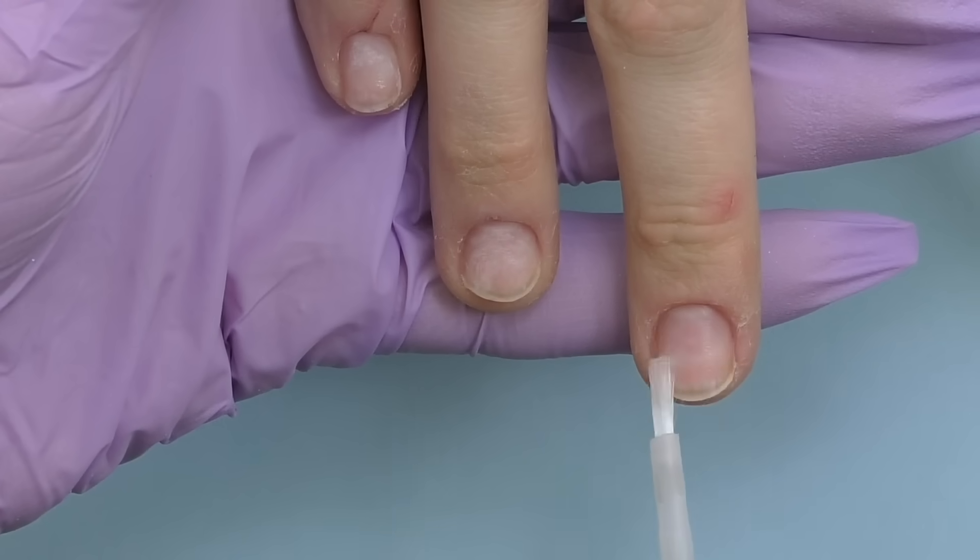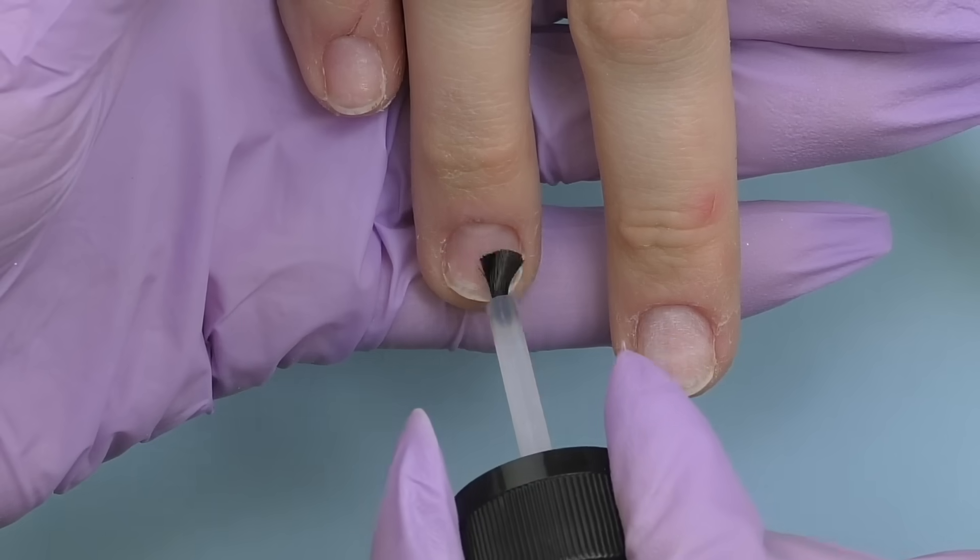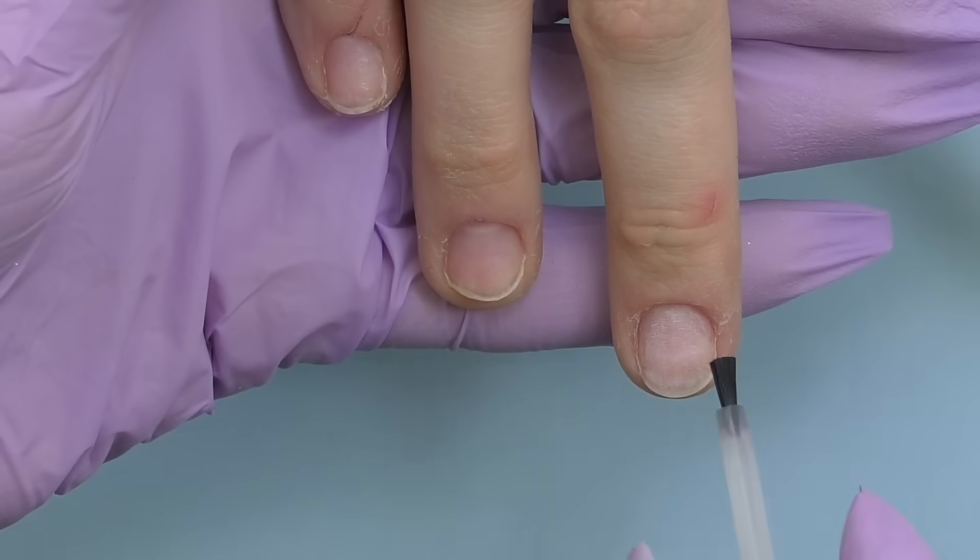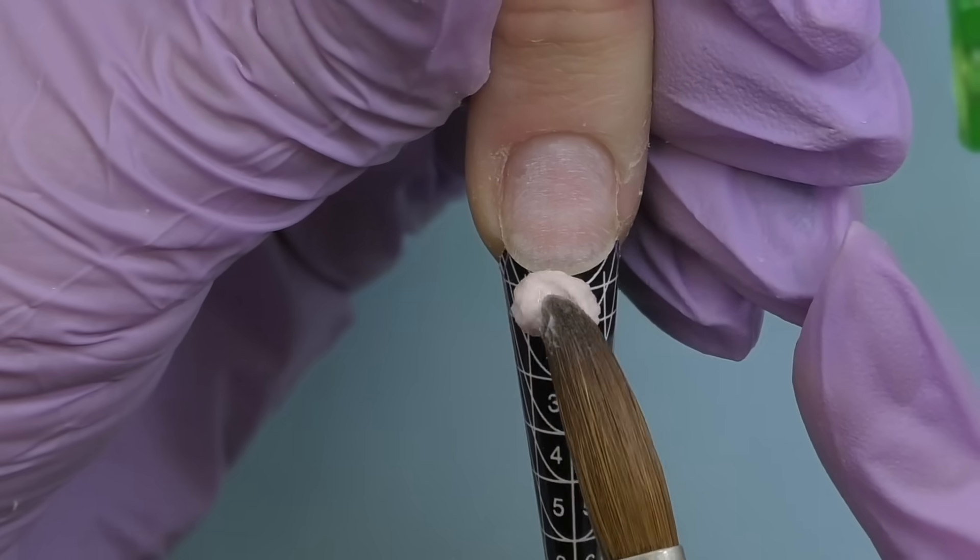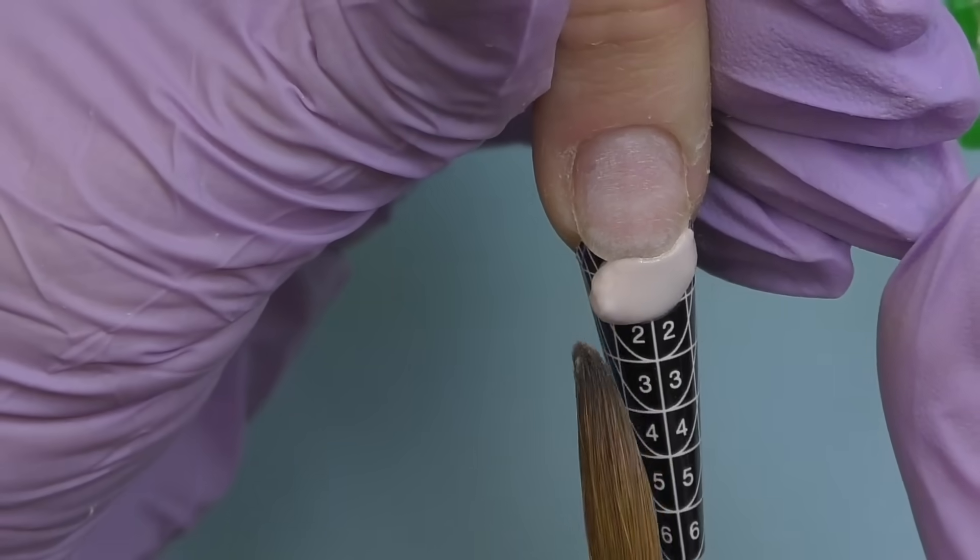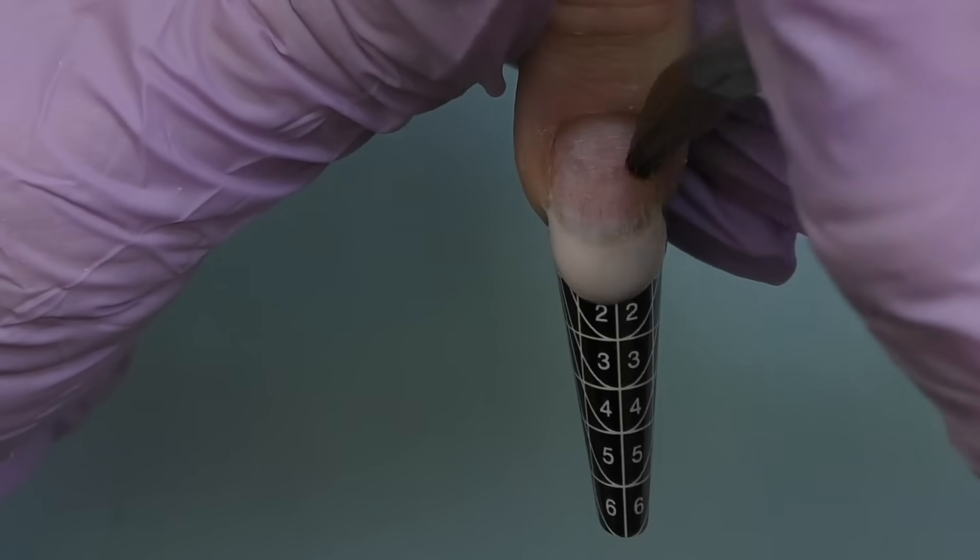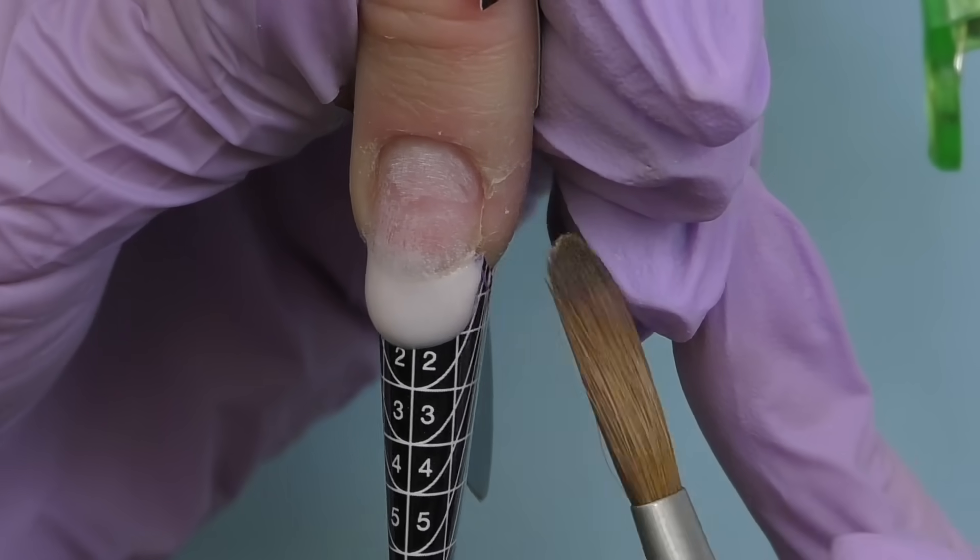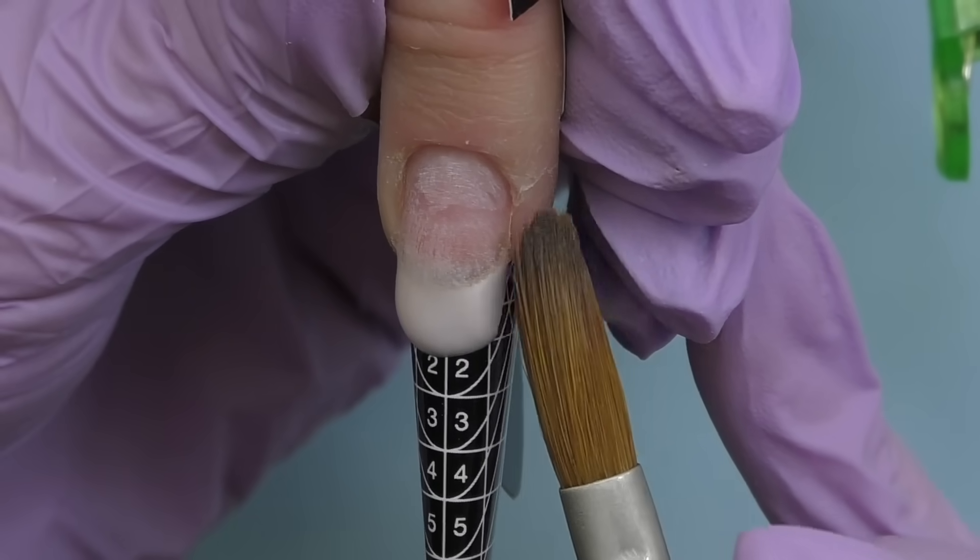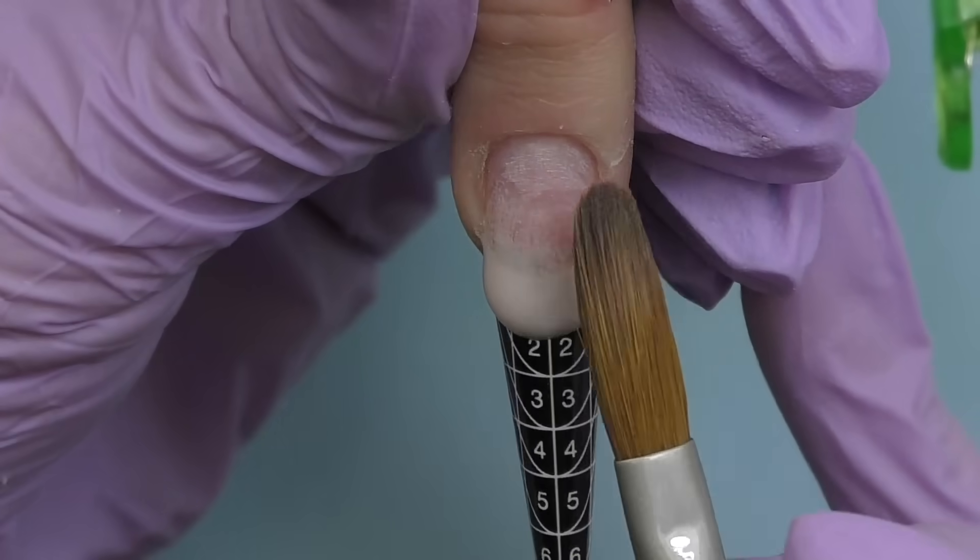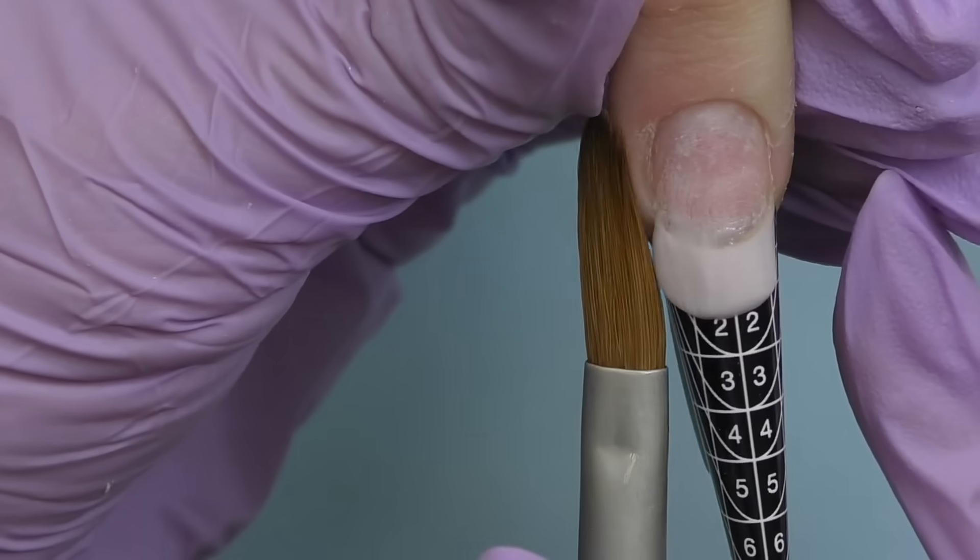Before we proceed to nail extensions, first we need to apply prep products, dehydrator and acid primer. We figured that it works best for Anna especially when doing acrylic extensions. Let dry and now let's do extensions. I fit the form and first I'm going to build the free edge. We decided to do Anna's favorite shape which is square and since her nails are slightly longer now, we can even do longer nails, but still we're not going to go extreme of course.